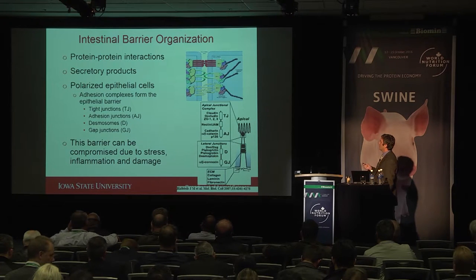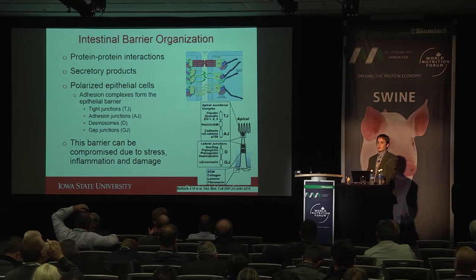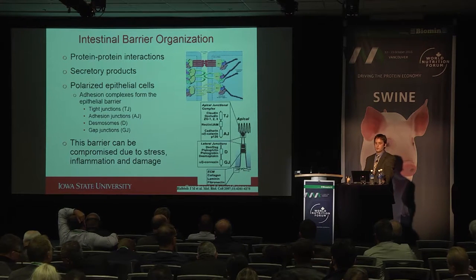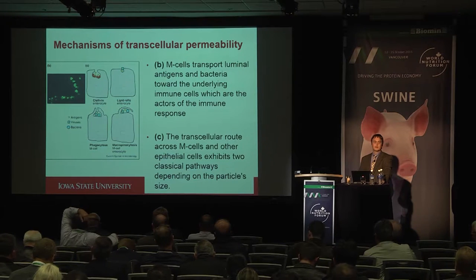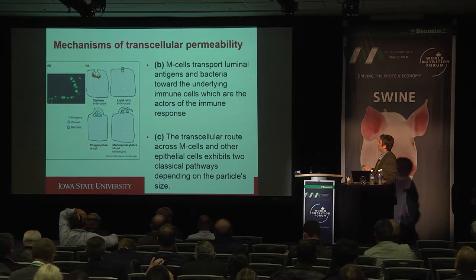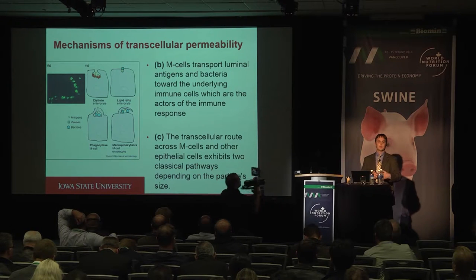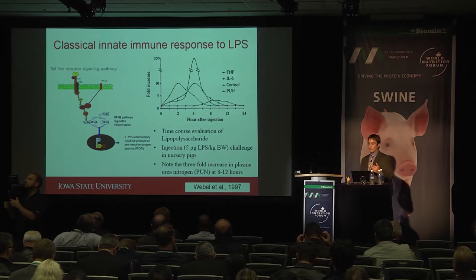Weaning stress is the prime example: stress and inflammation, both direct and indirect, can damage the gastrointestinal tract, tight junctions, and permeability. When thinking about macromolecule uptake through a non-selective manner into circulation, we need to consider M-cell transport of luminal antigens and also transcellular routes including clathrin-coated pits, lipid rafts, phagocytosis, and macropinocytosis — as modes to bring molecules, particularly pathogens and E. coli, into lymphatic or portal circulation.